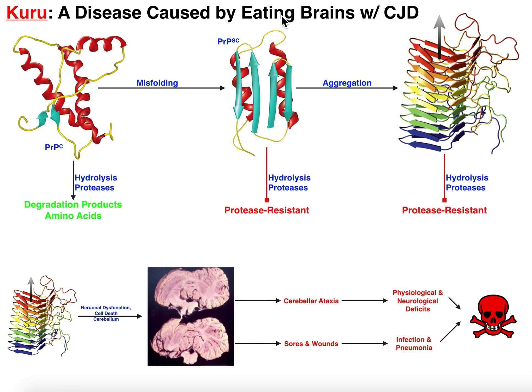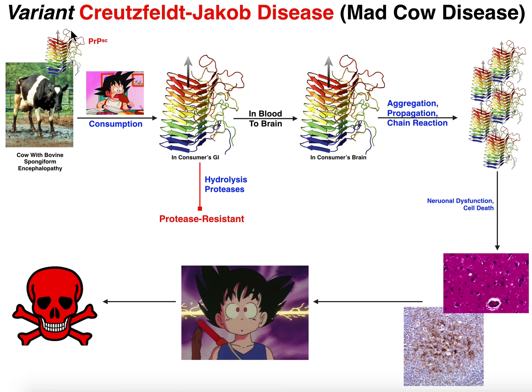What we're going to see in this video is that variant Creutzfeldt-Jakob disease is actually very similar in mechanism to Kuru, except that it doesn't require you to eat a human brain. It requires that you eat a cow that's affected with a very similar disease.